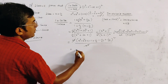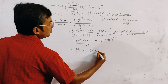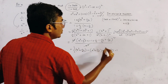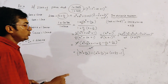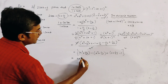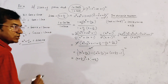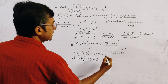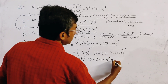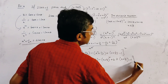We now group the terms: (x³ + 1/x³) - (x² + 1/x²) + (x + 1/x) - 1, all squared. We apply the identities: x³ + 1/x³ = (x + 1/x)³ - 3(x + 1/x), and x² + 1/x² = (x + 1/x)² - 2. This gives [(x + 1/x)³ - 3(x + 1/x)] - [(x + 1/x)² - 2] + (x + 1/x) - 1, whole squared.